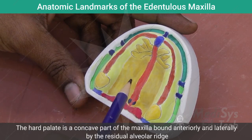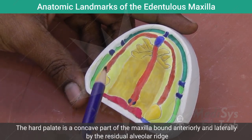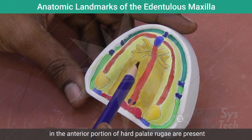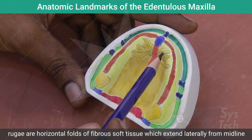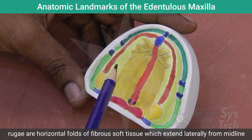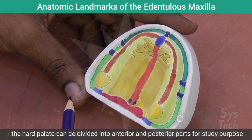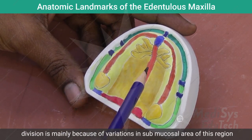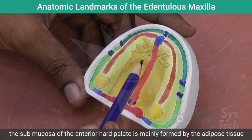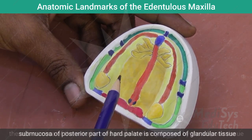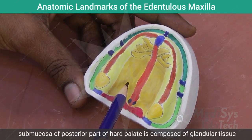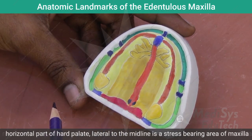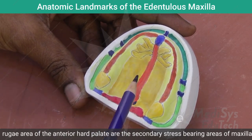The hard palate is the concave part of the maxilla bound anteriorly and laterally by the residual alveolar ridge and posteriorly by the soft palate. In the anterior portion of the hard palate are present the rugae — horizontal folds of fibrous soft tissue which extend laterally from the midline. The hard palate is divided into anterior and posterior parts due to variation in the submucosa: the anterior hard palate has adipose tissue submucosa, while the posterior part has glandular tissue. The horizontal part lateral to the midline is the primary stress bearing area, and the rugae area is the secondary stress bearing area.